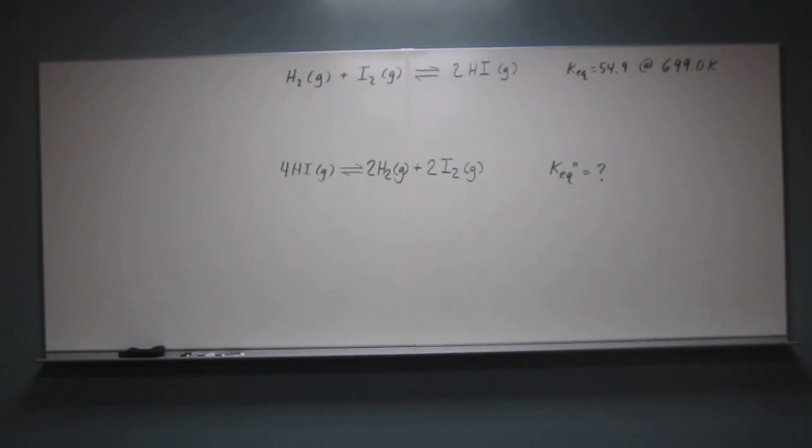What is the equilibrium constant for this new reaction: 4 hydrogen iodide goes to 2 molecular hydrogen and 2 molecular iodine at the same conditions?